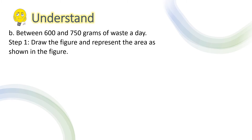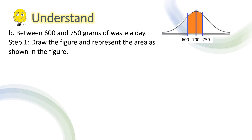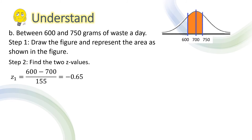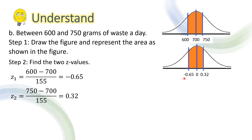For letter B, for step 1, we draw the figure and represent the area as shown. So 600 is to the left of 700 and 750 is to the right of 700. Next, we find the two z-values corresponding to 600 and 750. When x = 600: z₁ = (600 − 700) / 155 = −0.65. When x = 750: z₂ = (750 − 700) / 155 = 0.32. This means that 600 is 0.65 standard deviations to the left of the mean and 750 is 0.32 standard deviations to the right of the mean.